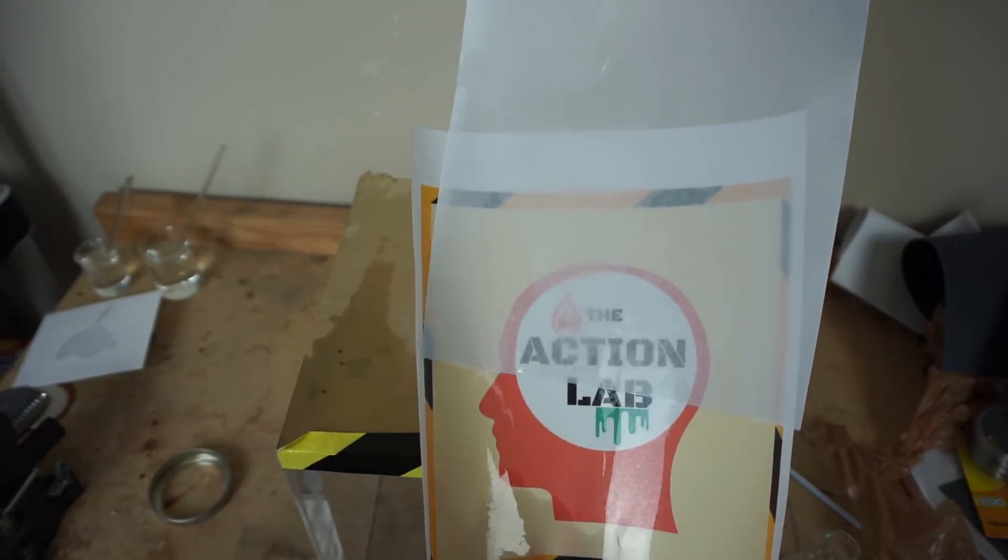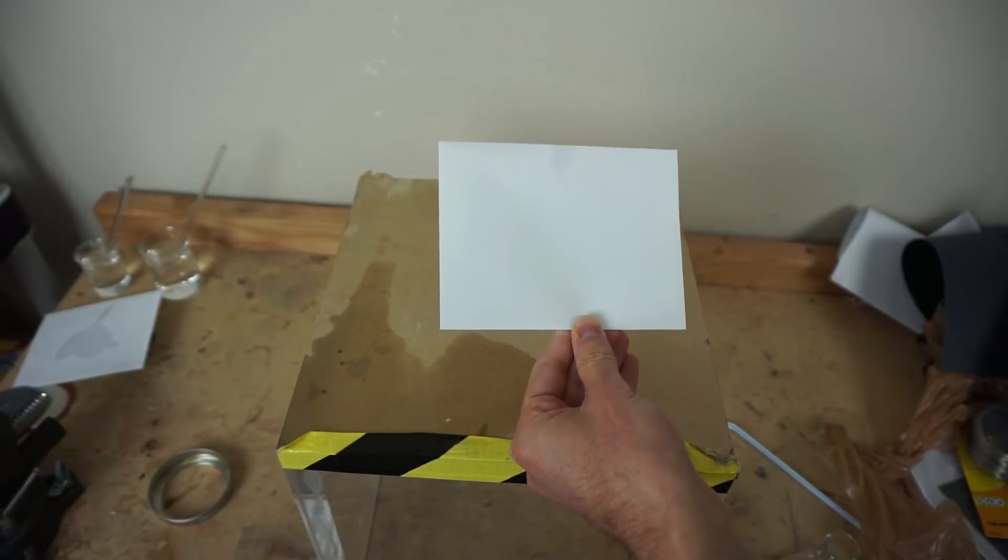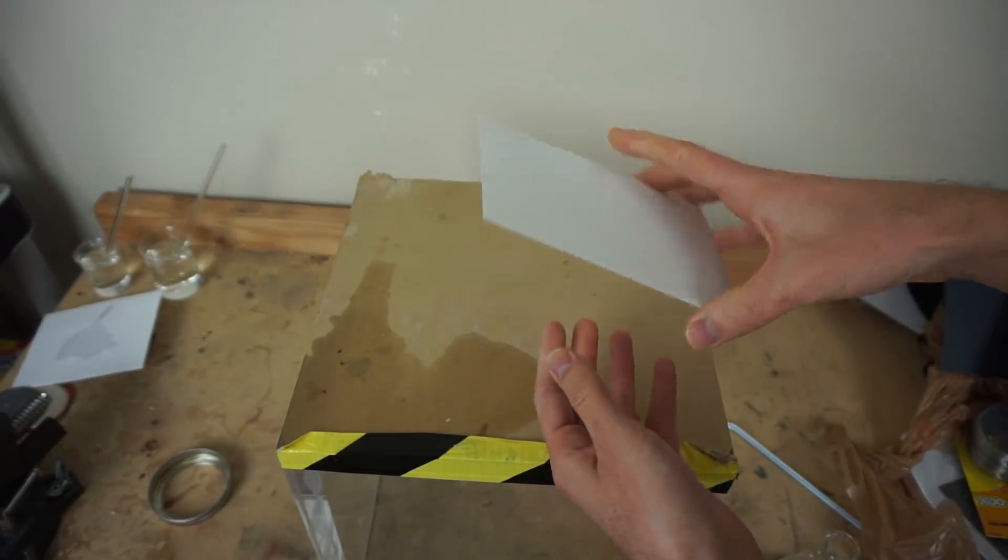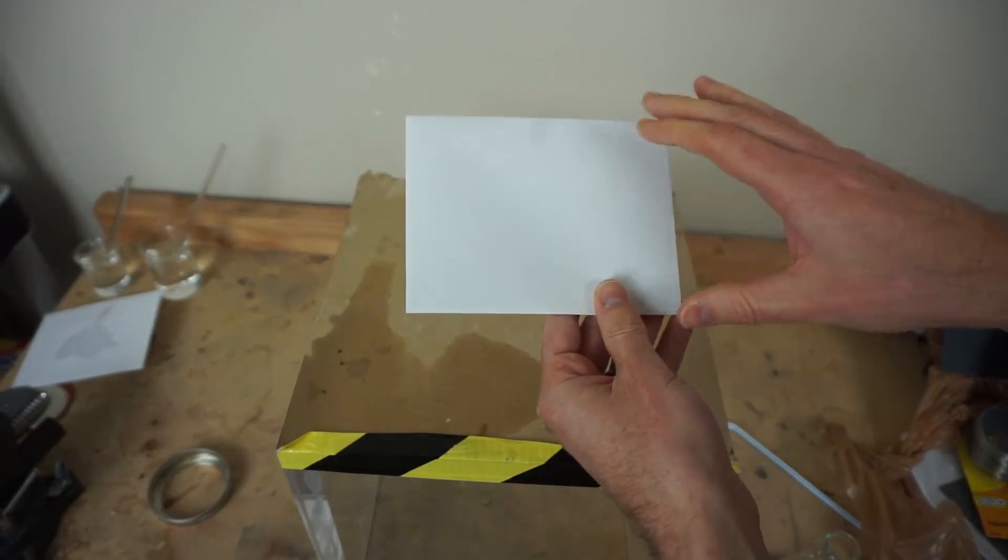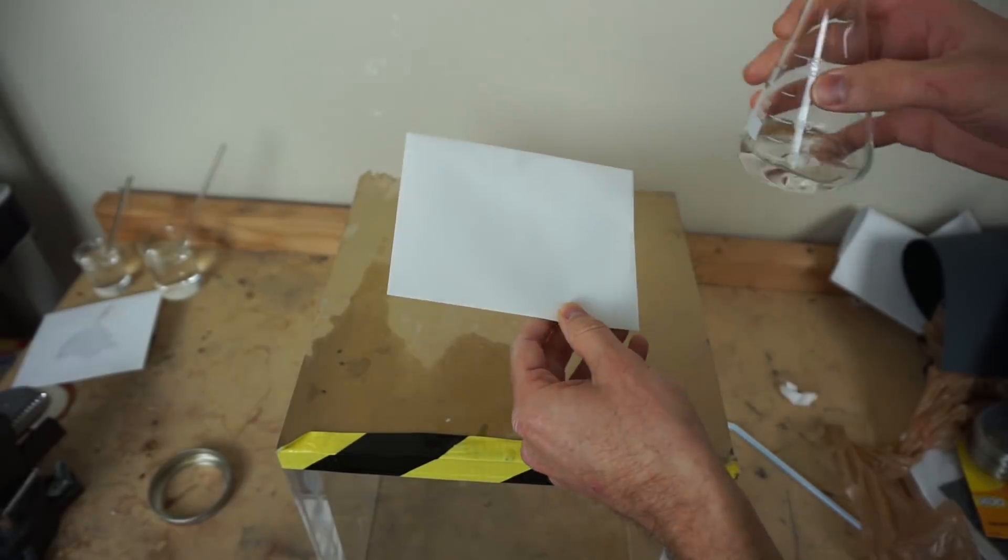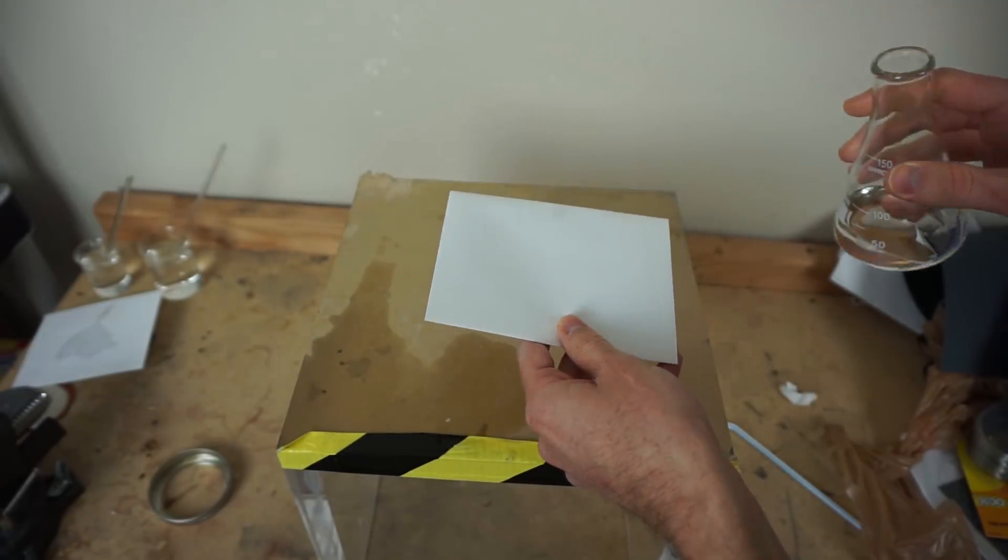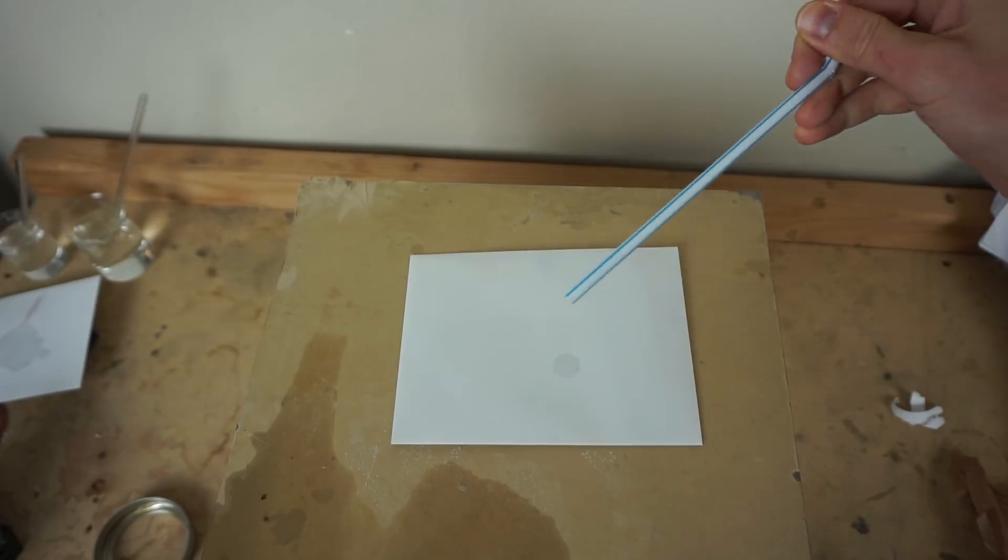So what can we do with this knowledge of making paper see-through? You can read top secret letters. So let's say you have some letter that you're not supposed to open, but you still want to know what's inside of it. Well, just get some isopropyl alcohol. Let's see what this says. Okay, here we go.